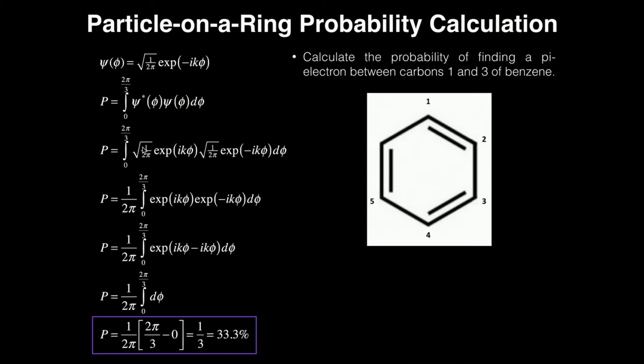Now, I can pull these two square roots because they're constants outside of the integral, and when I do that, they're going to be multiplied together, and the square root sign disappears. So I'm going to have a one over two pi out in front of the integral times the integral from zero to two pi over three times the product of these exponential functions d phi.